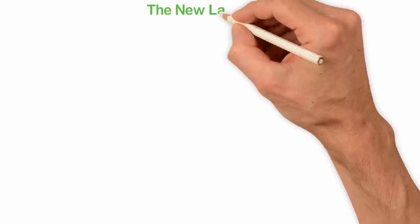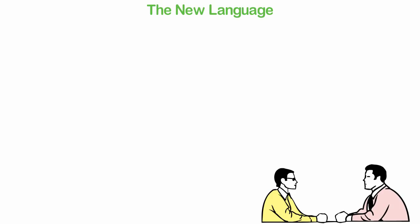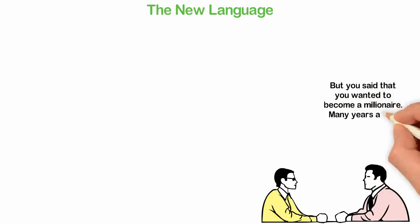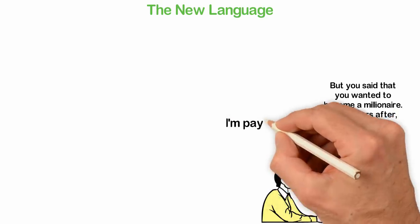The New Language. Five years after I had been an entrepreneur without any success, my elder brother called me and asked me: But you said you wanted to be a millionaire. Many years after, you're still broke. I looked at my brother's face and told him, I'm paying the price.